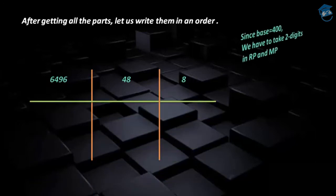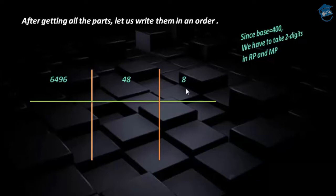We are finding the cube of a 3-digit number and the base is 400 — you can observe 2 zeros in the base. Therefore, we have to take only 2 digits in the right part as well as in the middle part, but in the left part we can have as many digits as we want. The right part answer is a single digit number, so in order to make it a 2-digit number, I am placing a 0 in front of 8, giving us 08 in the right part.